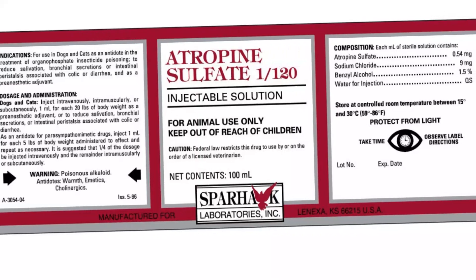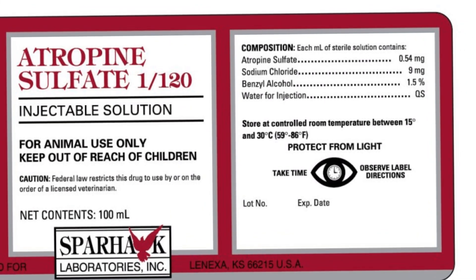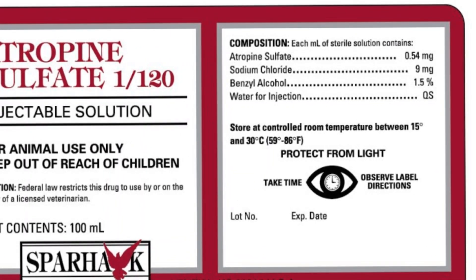I want to show you the concentration in this bottle to illustrate how powerful atropine must be. Each milliliter contains these ingredients — one milliliter of water weighs one gram, and most of this is water. In one gram of water you have just 0.54 milligrams of atropine. Milli means a thousandth of a gram, so we don't even have one thousandth of a gram. There's also sodium chloride, benzyl alcohol as a preservative, and the rest is water.